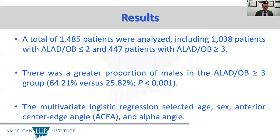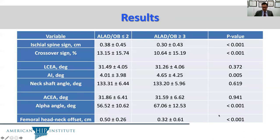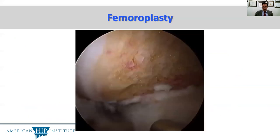A total of 1,485 patients were analyzed, including 1,038 patients with ALAD or Outerbridge grade 2 or less, and 447 patients with higher grade ALAD or Outerbridge. There was a greater proportion of males in the higher grades of cartilage damage than in the lower grades. The multivariate logistic regression selected age, sex, anterior center edge angle, and alpha angle.